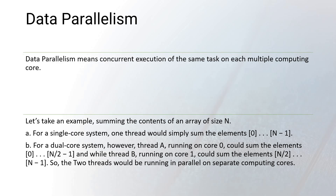On a dual core system, Thread A running on core zero could sum elements from index 0 to n/2 minus one, while Thread B running on core one sums the remaining elements in parallel. Two threads run in parallel on separate computing cores — this is called data parallelism: concurrent execution of the same task on multiple computing cores.